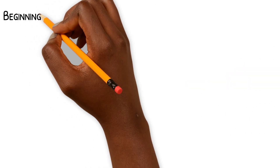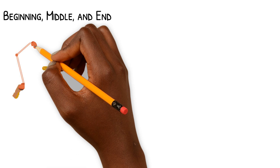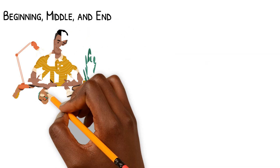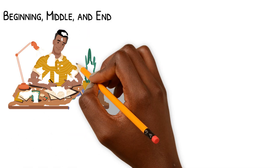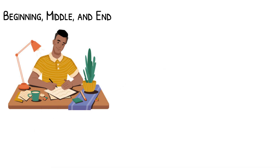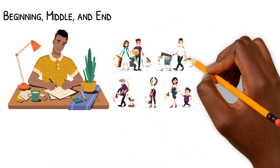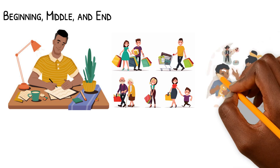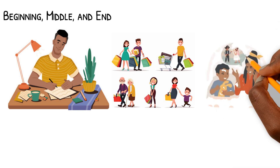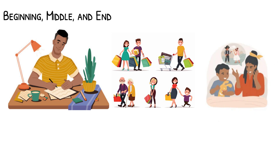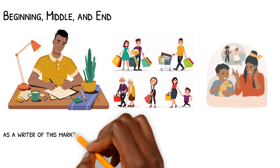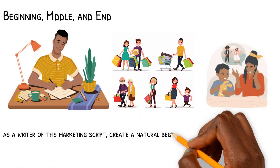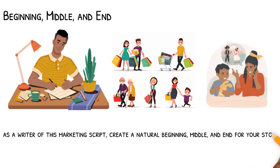Beginning, middle, and end. Every story, including your marketing script, should have a beginning, middle, and end. It should show customers their buying journey. People have been subconsciously exposed to this story structure from the time they were read bedtime stories as a child. It's a natural way of conveying information in a script. It's important that you, as a writer of this marketing script, create a natural beginning, middle, and end for your story.